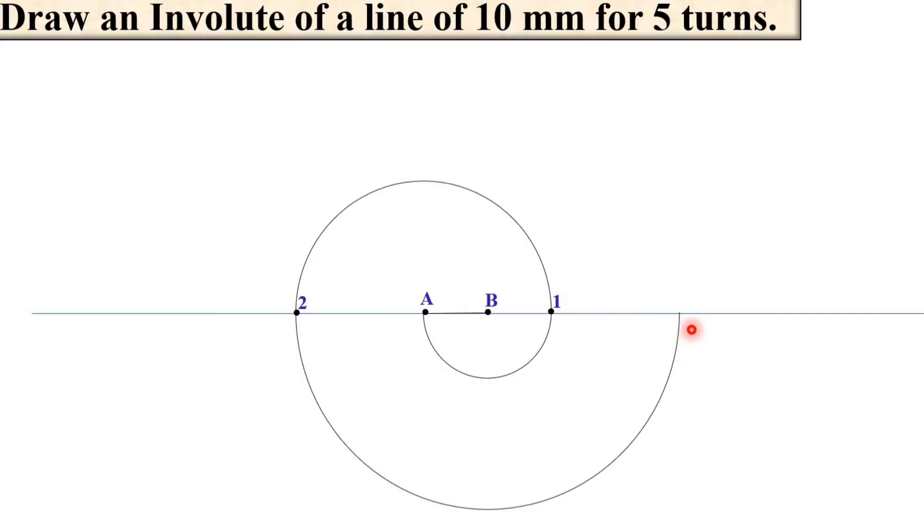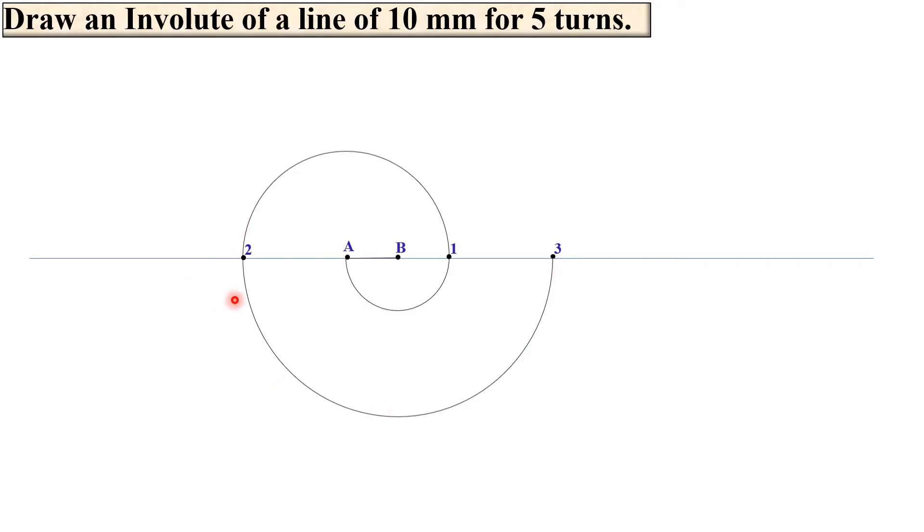So you will get the intersection point over here. Mark it as 3. So this is the third turn for the line AB.